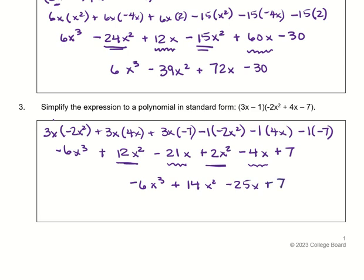Same process over and over again: we start by distributing, then go through and do the multiplication, then combine like terms. Pretty straightforward, repetitive process. I'm sure you've got it and found any little mistakes along the way. I'll see you again in problem set 4.